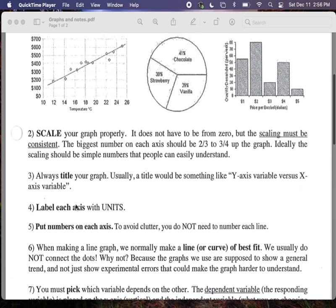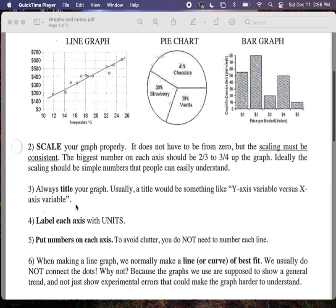So when making a graph, we normally make a line or curve of best fit. We don't connect the dots because graphs are supposed to show the general trends of information. And when we collect data in class, we could have experimental errors or uncertainties, which are things that really are not important to the general trend. They make things look messier and they actually distract you from the general trend.